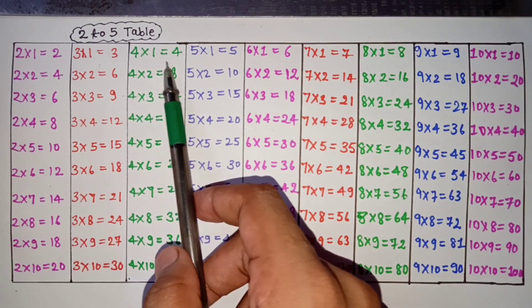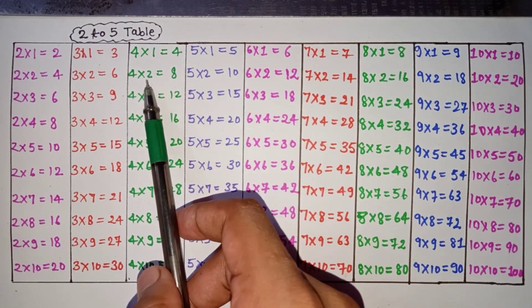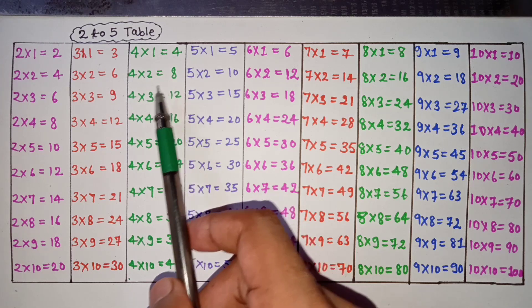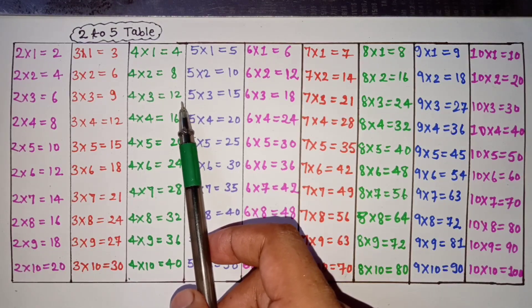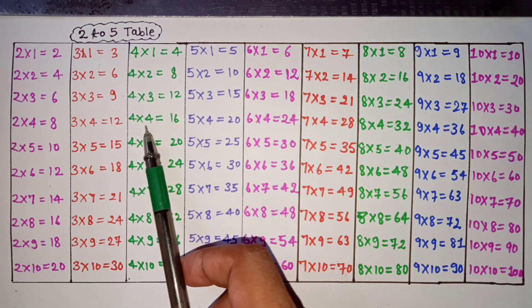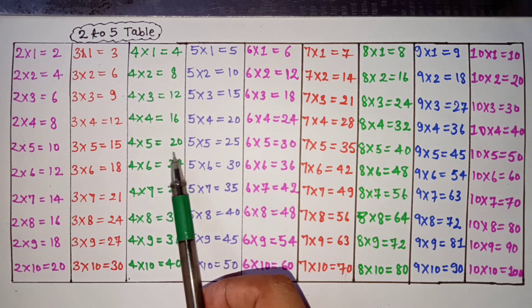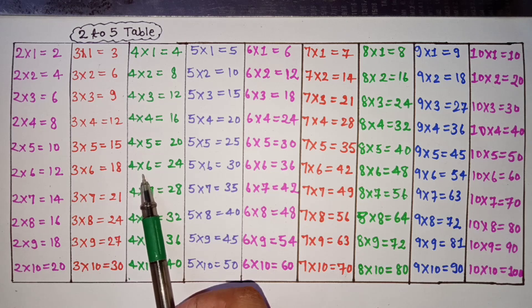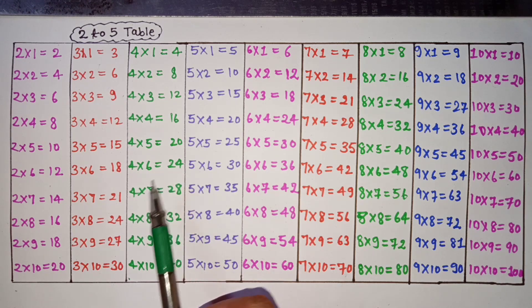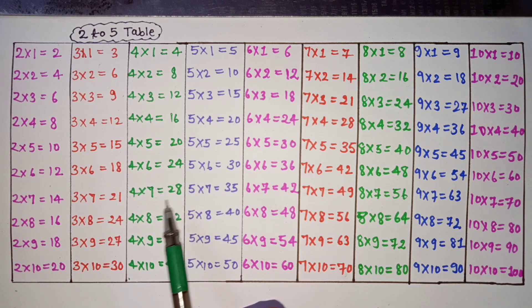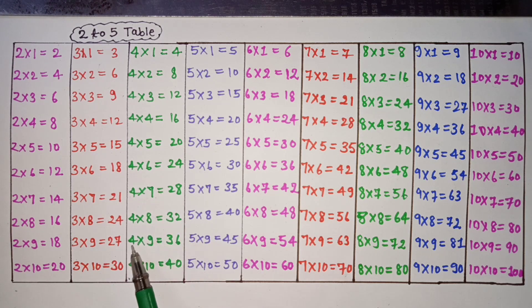4 ones are 4, 4 twos are 8, 4 threes are 12, 4 fours are 16, 4 fives are 20, 4 sixes are 24, 4 sevens are 28, 4 eights are 32, 4 nines are 36, 4 tens are 40.